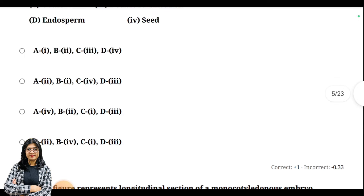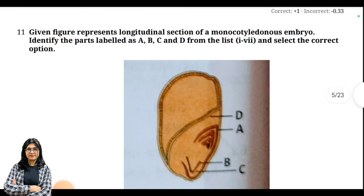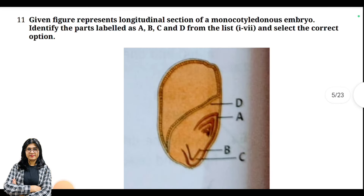Let's go to question number 11. This is a related diagram question with four labeled parts — A, B, C, D — and you have to identify each label correctly.